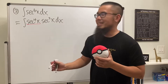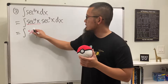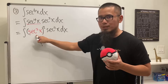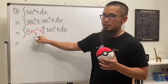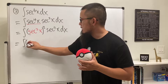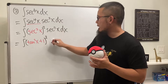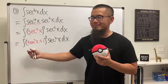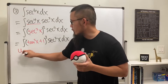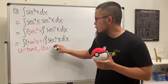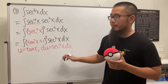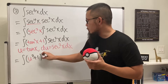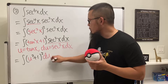We can make that happen by looking at secant to the fourth power as (secant squared x) squared, and we still have secant squared x. We replace (secant squared) with (tangent squared plus 1). So the integral becomes (tangent squared x plus 1) squared times secant squared x dx. Now we do a u-sub: let u equal tangent x, then du equals secant squared x dx, which is exactly this part.